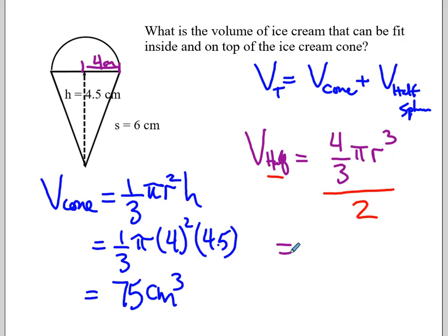So now if we punch in the numbers, 4 divided by 3 times π times, now I've got to be careful here, this is going to be 4 cubed, and then take that final answer and divide by 2. I get 134 cubic centimeters, which means my total volume would add those two together for 209 cubic centimeters.